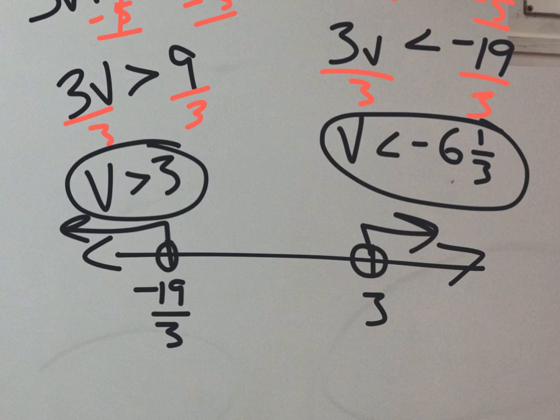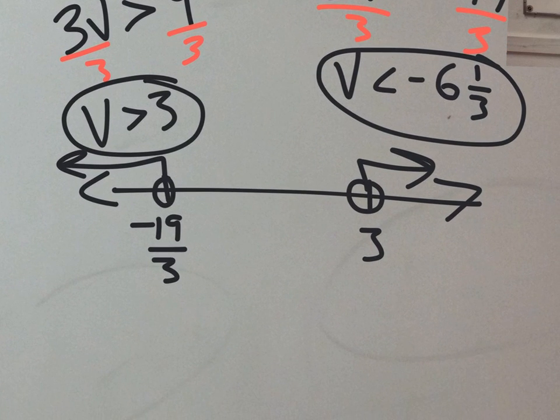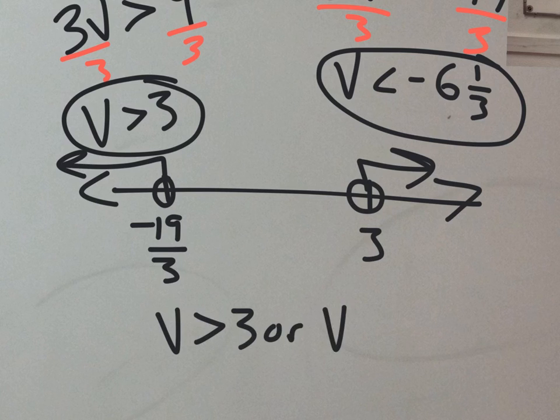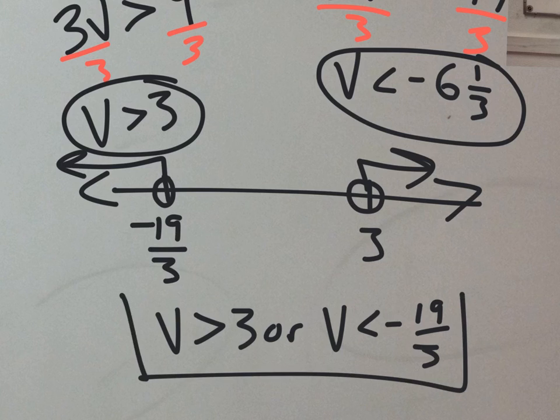And because we have areas that are apart, we need to write our answer with the word or right between it. We don't have to write a compound inequality where we put it all together as one. We just leave them apart. V is greater than 3 or V is less than negative 6 and 1 third or negative 19 thirds. Whatever you prefer is okay with me. That would be your final answer. What do you guys think?